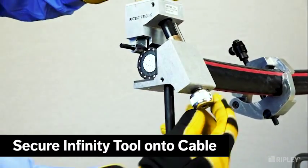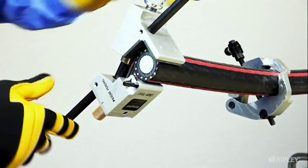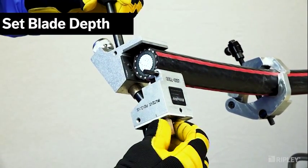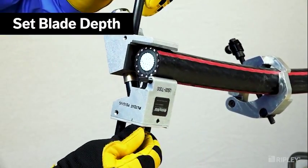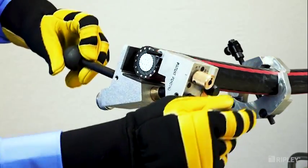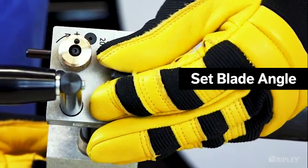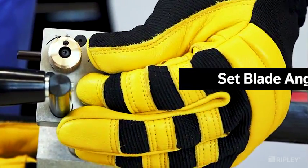Install the tool around the cable with the blade edge overhanging the cable end. Set the blade depth between 15 to 20 thousandths above the concentric wires or metallic shielding. Next, set the blade angle between 3 and 9 degrees by sliding the knob.